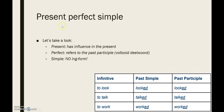Now let's take a look at the present perfect simple. If you take a look at all the words: 'present' means it has influence in the present — so it's something that happens in the past, but it still has some influence now. The word 'perfect' refers to the past participle, which translates as 'voltooid deelwoord'. And 'simple', as always, means no -ing form. So we've got the infinitive, we've got the past simple, and we've got the past participle.